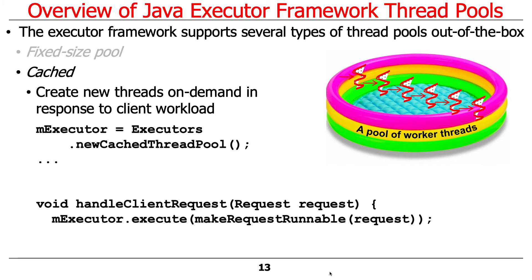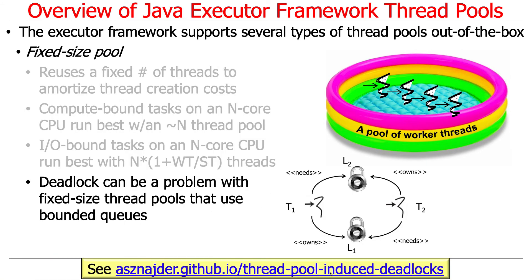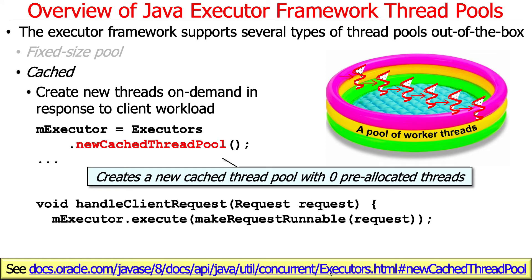Because of these complexities, there are other kinds of thread pools. Another type available out of the box with the Java Executor Framework is the cached thread pool. You create one using the newCachedThreadPool factory method on the Executors utility class — unlike newFixedThreadPool for fixed pools. Cached thread pools create new threads on demand in response to client workload.